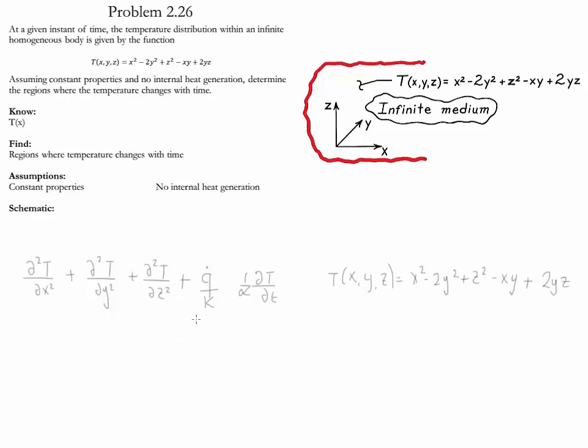Since we do not have internal heat generation, this term is equal to zero. We need to determine the second derivative of temperature with respect to x, y, and z, substitute it in this area, and then we could determine what are the regions that change with time.